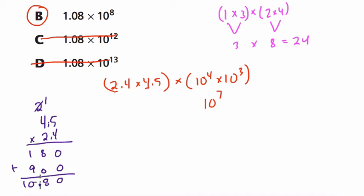Then we move our decimal over twice. We carry these 2 places over. And our answer is 10.8. So that means 2.4 times 4.5 is 10.8.